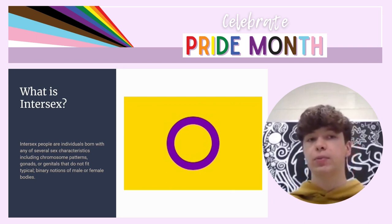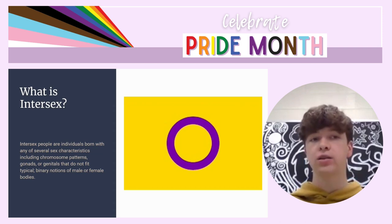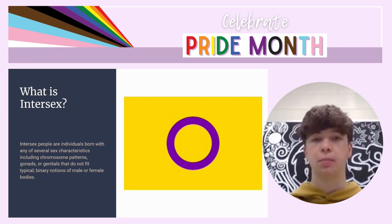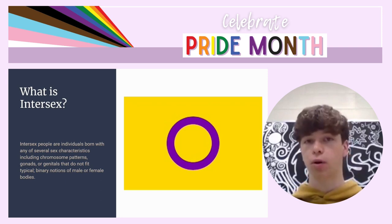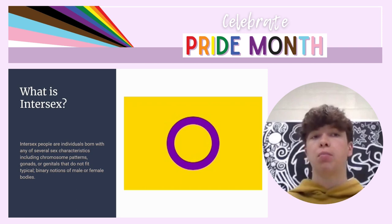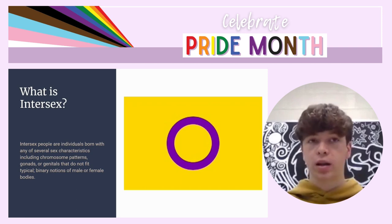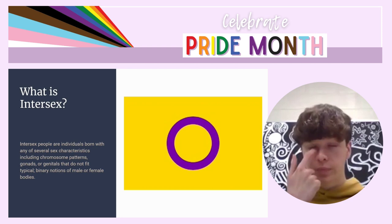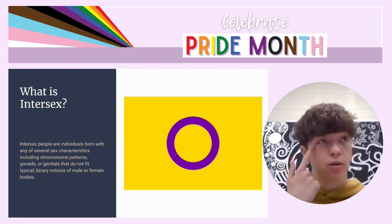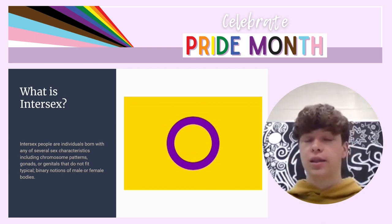Intersex. Intersex people are individuals born with any of several sex characteristics, including chromosome patterns, gonads, or genitals that do not fit the typical binary notions of male or female bodies. Intersex is actually the third sex — we have male, female, and intersex; these are the three sexes you can be born. Intersex people can be born with both male and female, as an example, male or female genitalia, but could have chromosomes or genitalia of the opposite, and can grow up and go through puberty as the opposite.